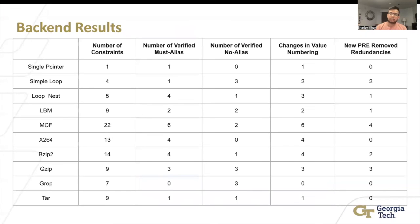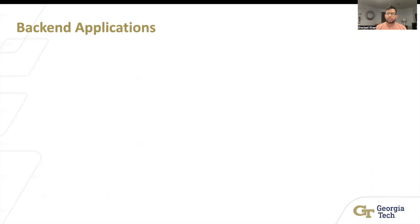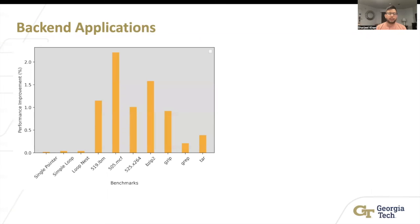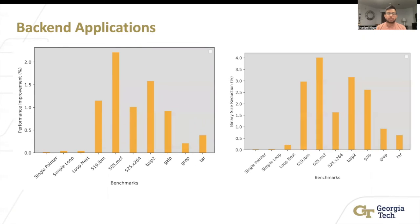Now for the backend results, we found that 93 alias constraints, a lot more in the real benchmarks, because those are real may alias cases. Even though 93, only a few of them became must aliases or no aliases. And even a few of them actually caused a change in the value numbering and actually led to PRE removal from redundancies.